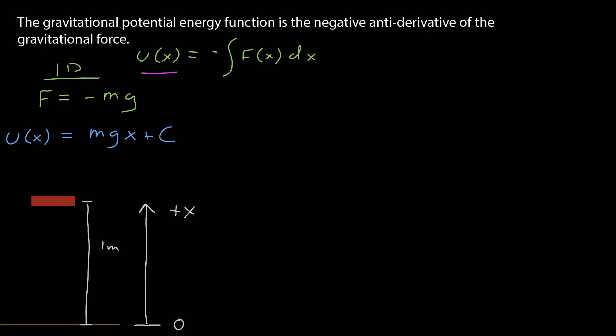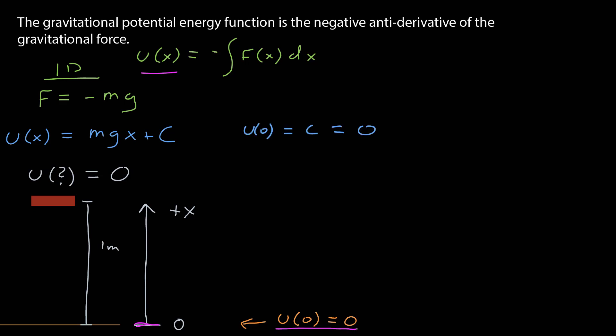How do we find that constant? Recall that only differences in potential energy matter. That means once we define a potential energy function, where the zero of that function is is a choice — we can decide where it should be. So the question is: at what location should the potential energy function be zero? For example, if I have this book being lifted up one meter, I've set the zero of my coordinate system at the ground, and I'm going to say the zero of my potential energy is also at the ground.